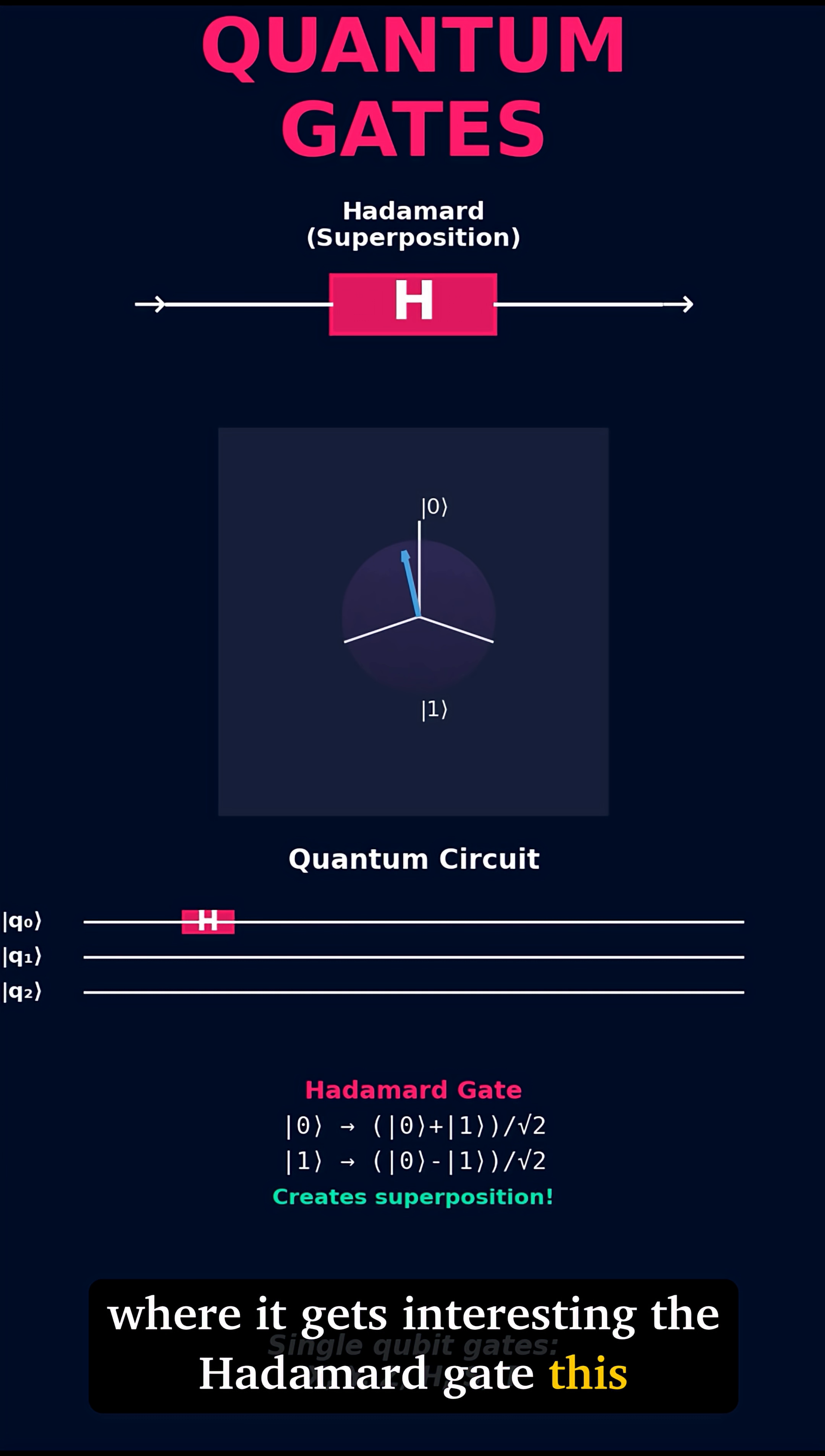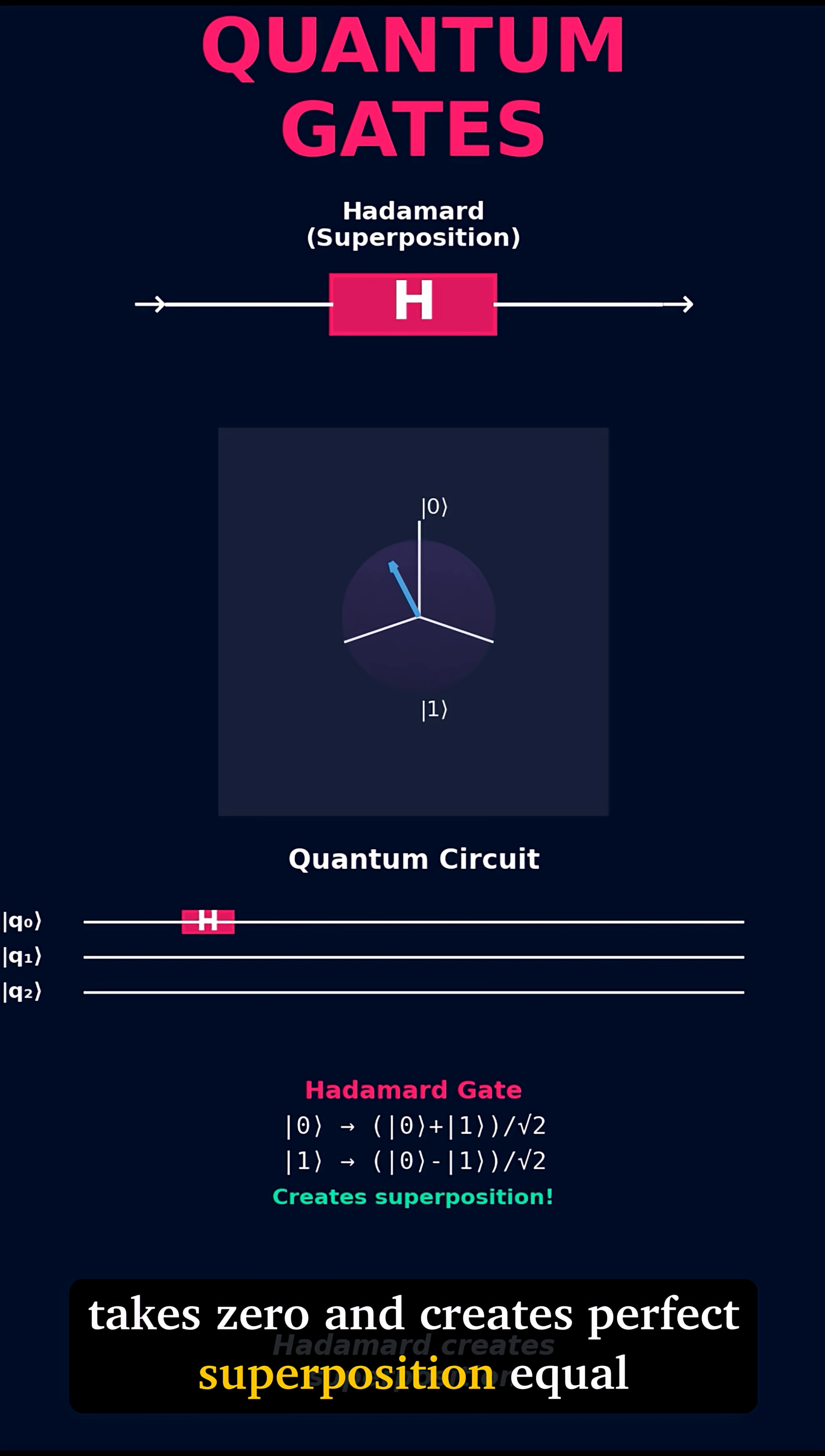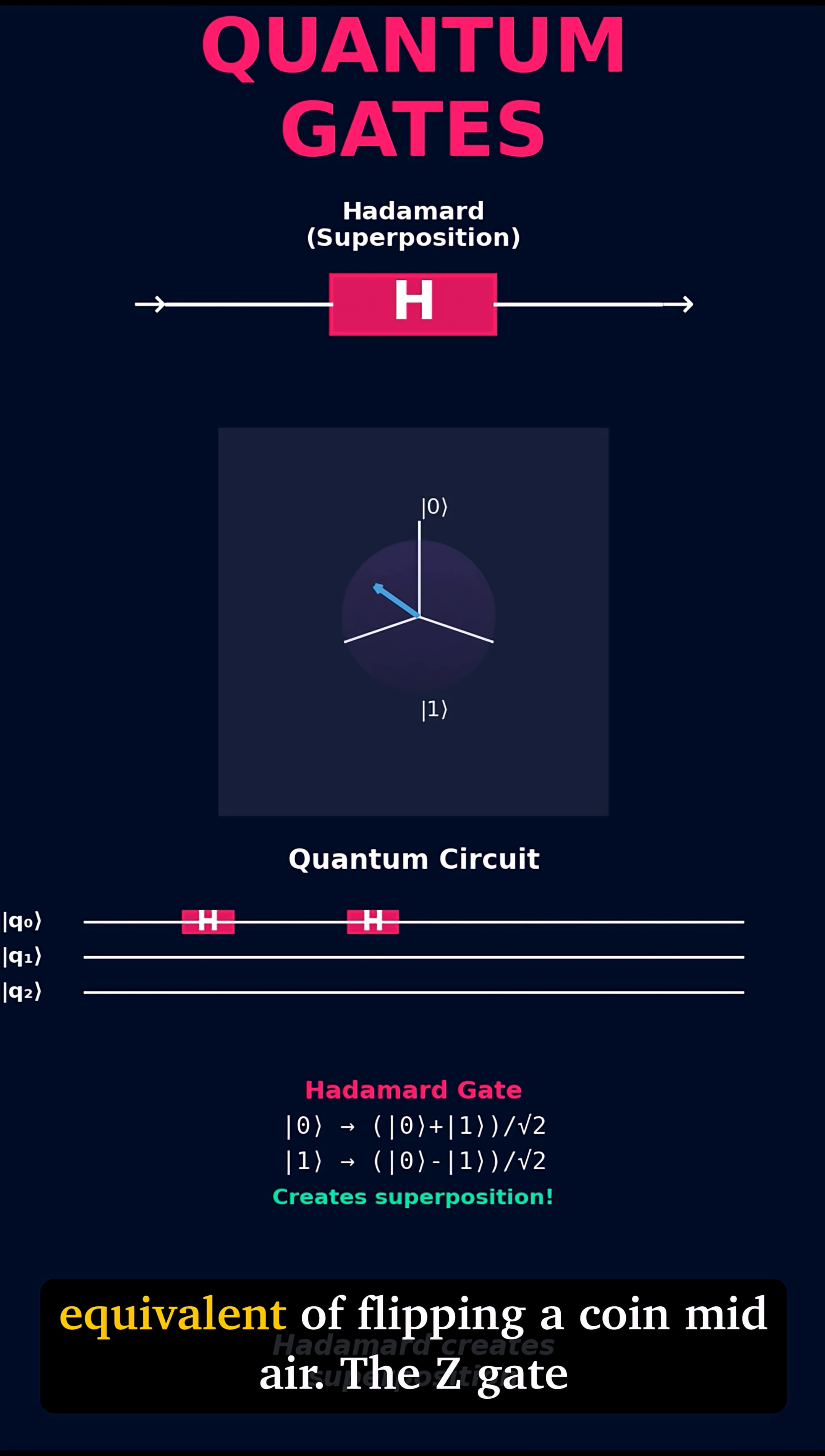The Hadamard gate. This takes 0 and creates perfect superposition. Equal probability of 0 and 1. It's the quantum equivalent of flipping a coin midair.